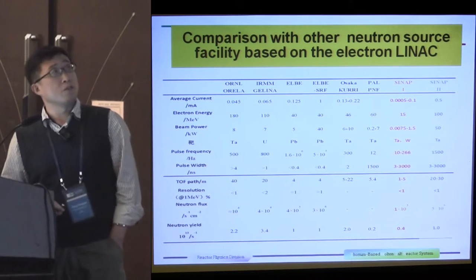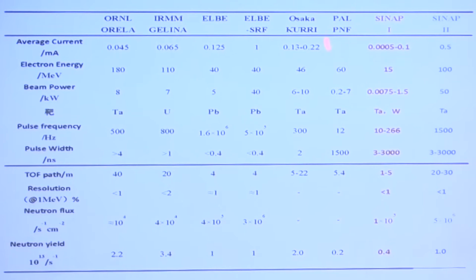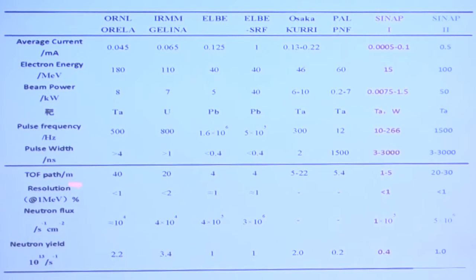Comparison with other neutron source facilities based on the electron linac. Here is our SNAP-1 first phase. We will use 15 MeV electron energy. The target will be tungsten and tantalum. The pulse frequency from 10 to 233, 266 Hz. Pulse width from 3 nanoseconds to 3 ms. The flight path will be from 1 m to 5 m. The neutron flux is about 0.4 times 10 to the 13 neutrons per second.